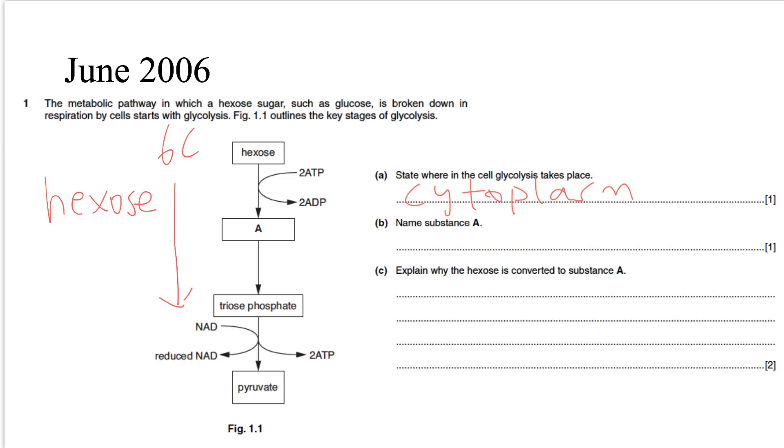But remember, ATP is used. Two ATP molecules are used to phosphorylate this hexose sugar. So there's a hexose bisphosphate. You don't need to remember any specific name here. Hexose bisphosphate is sufficient.